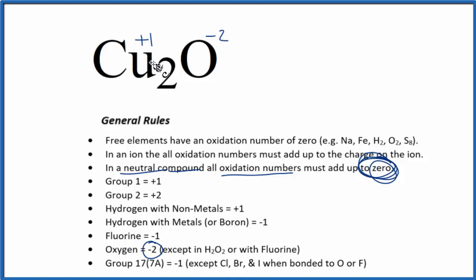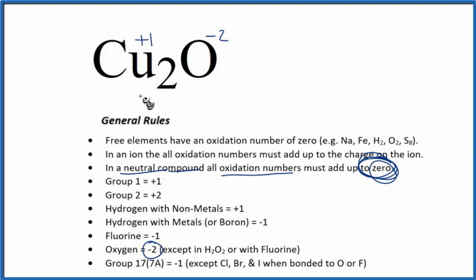Note we call this copper one oxide because of this plus one here — copper one oxide. This is Dr. B with the oxidation numbers for Cu2O, copper one oxide. Thanks for watching.